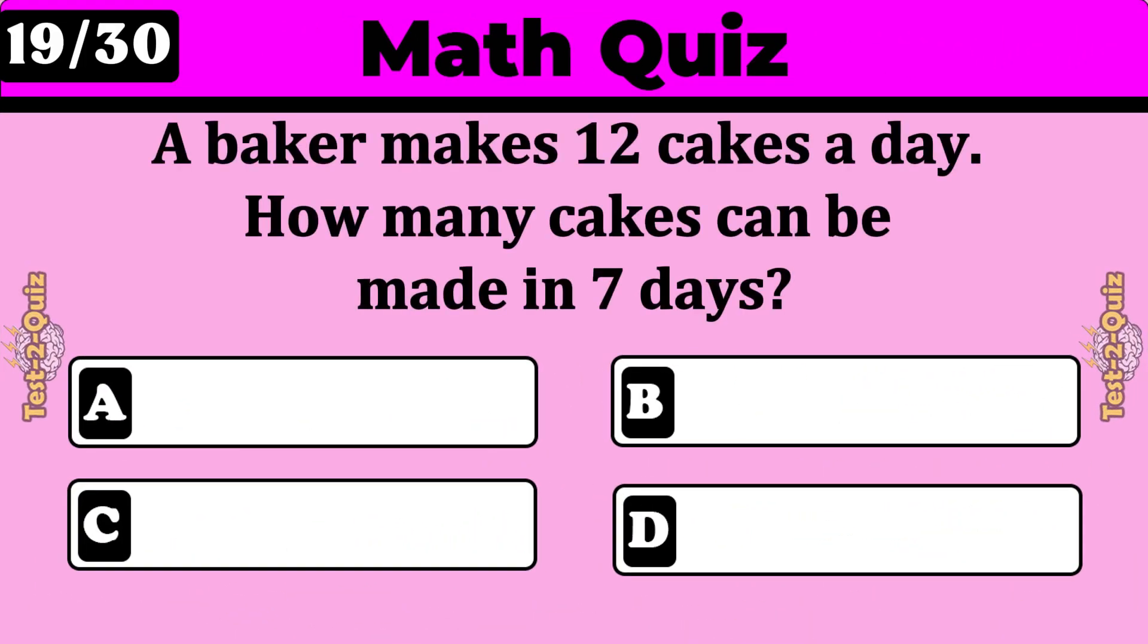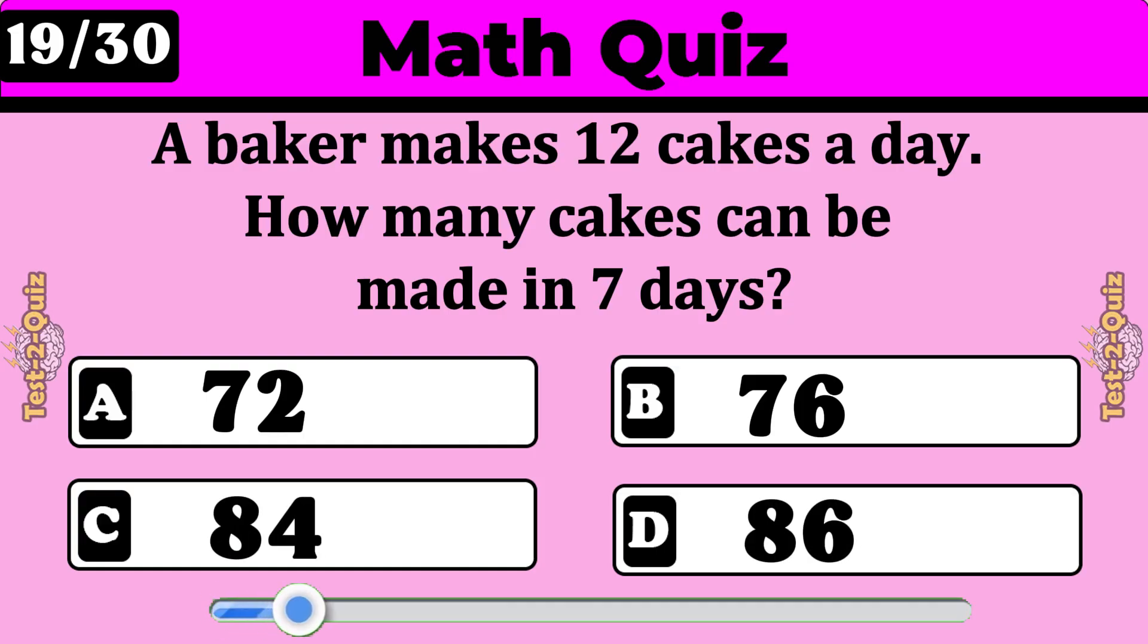A baker makes 12 cakes a day. How many cakes can be made in seven days? 84 cakes.